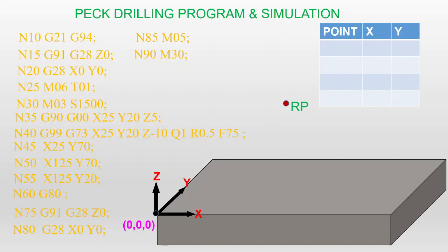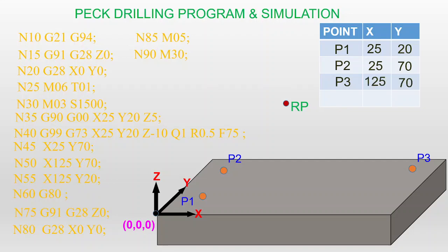I want to prepare a tabular form for the four holes before writing the program. Point 1 has X = 25 and Y = 20. Point 2 has X = 25 and Y = 70. Point 3 has X = 125 and Y = 70. Point 4 has X = 125 and Y = 20. These are the four points where we want to make the drilling operation.